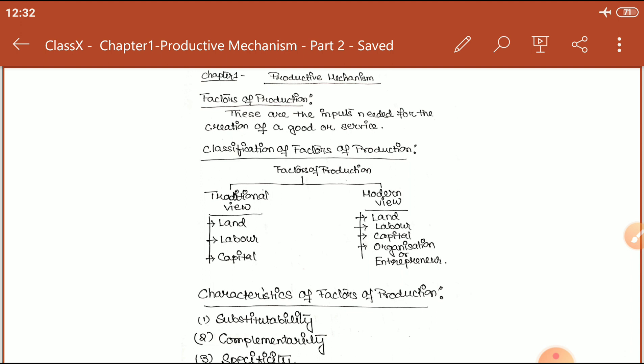Now comes the classification of factors of production. There are two views regarding the classification: one is the traditional view and another is the modern view.